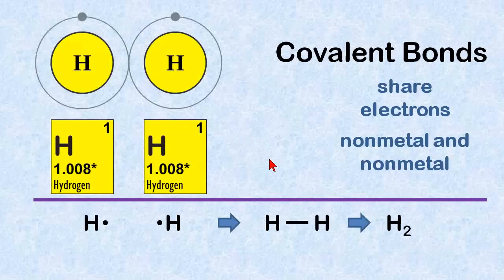Let's review covalent bonds for a moment. The simplest covalent bond we have is a hydrogen to hydrogen bond. Covalent bonds are a little bit different than ionic bonds. Covalent bonds share electrons, and they typically occur between a non-metal and a non-metal.